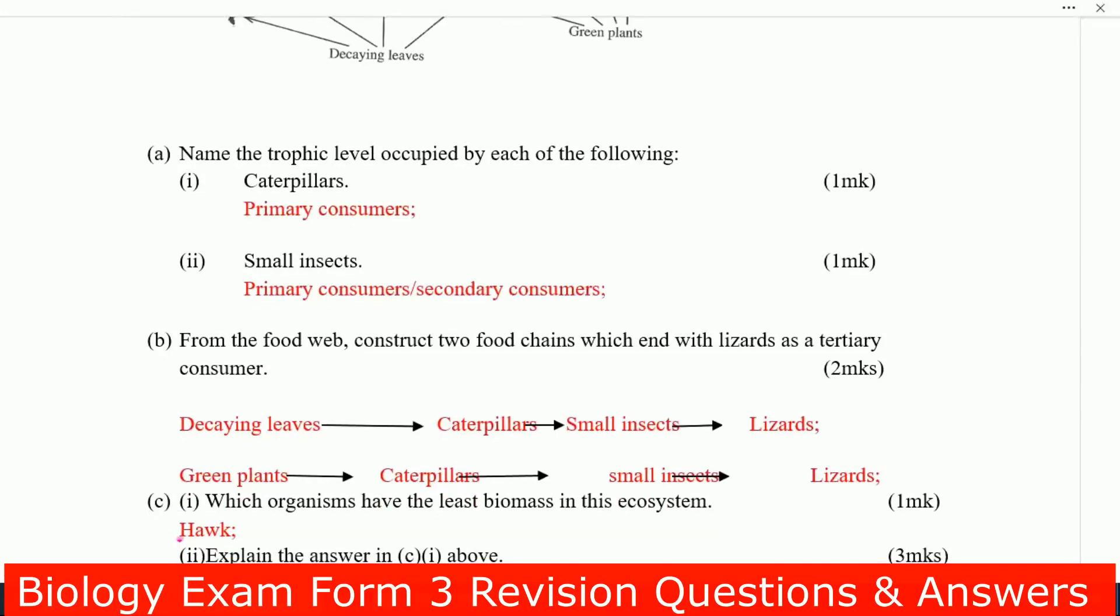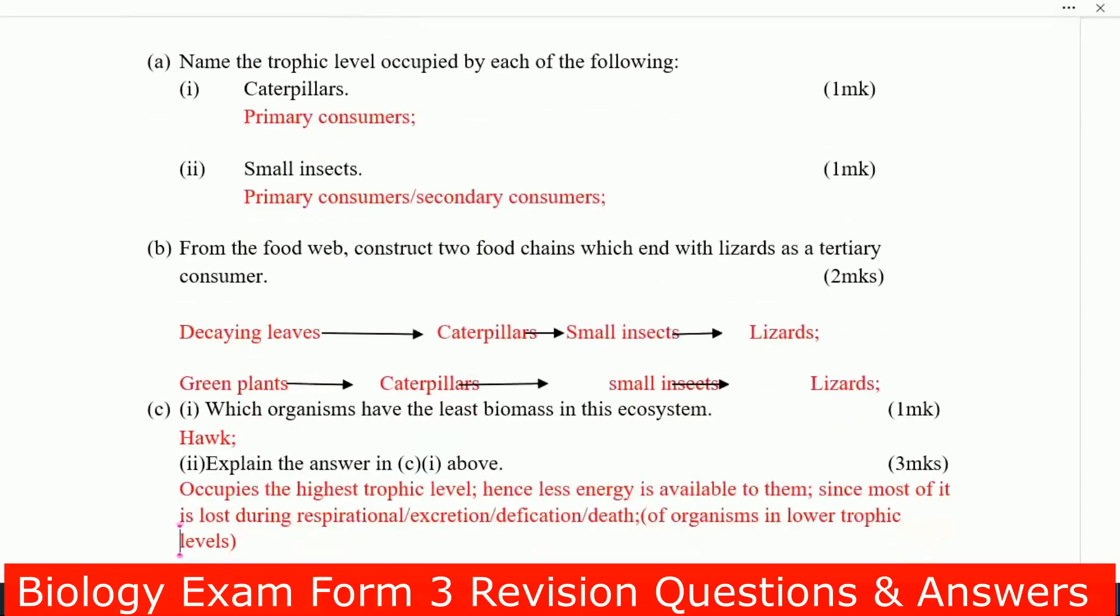From the food web, construct two food chains which end with lizards as a tertiary consumer. This is how you get it: decaying leaves eaten by caterpillars, caterpillars eaten by small insects, and then the final tertiary consumer is lizards. The second one, green plant, caterpillars, small insects, then lizards.